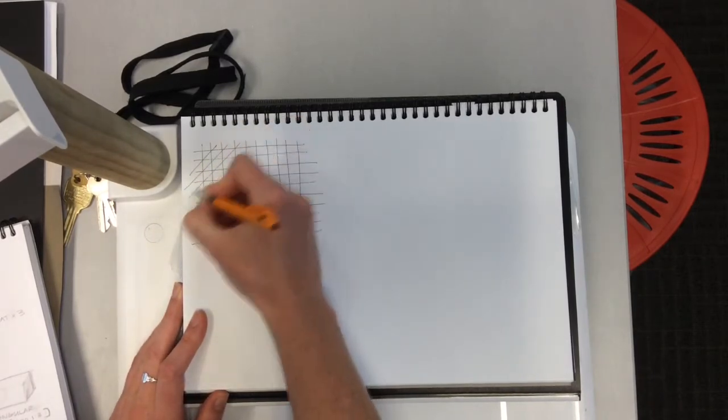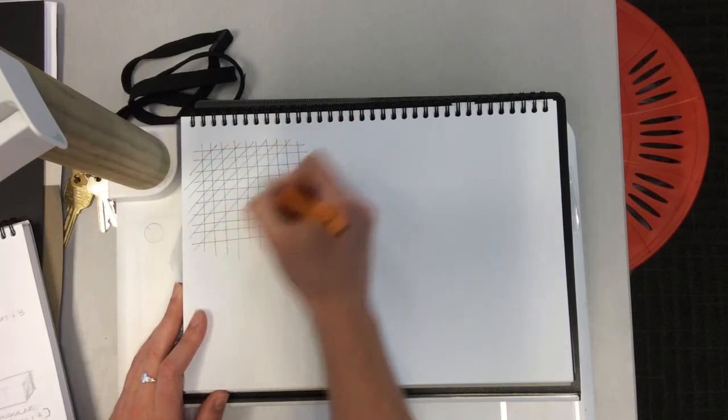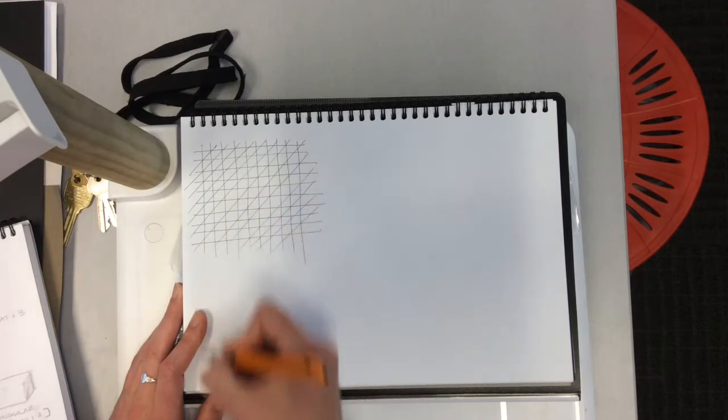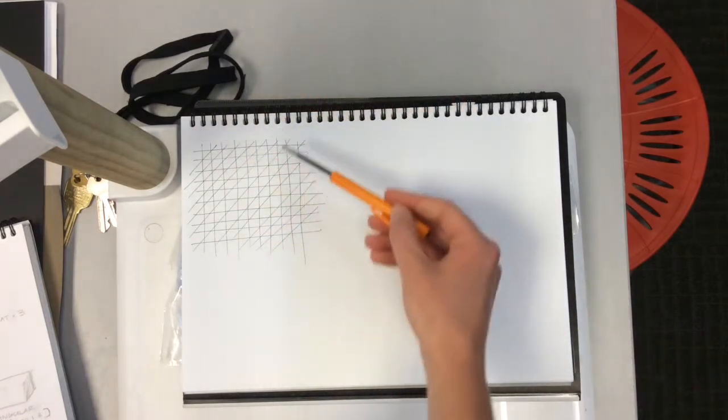Then you're going to do some 45-degree lines, kind of half of that 90-degree angle. Ideally keep that gap similar. Now you've practiced parallel lines. If this didn't work out, do it again.